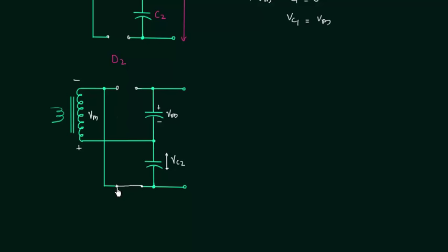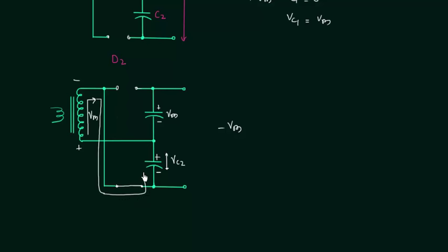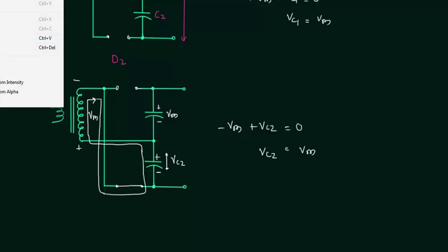Now we use Kirchhoff's voltage law to find the charge on the plates and calculate Vc2. This plate is connected to the positive terminal so it will have positive charge, and this plate is connected to the negative terminal so it will have negative charge. Moving in the clockwise direction: minus Vm, then plus Vc2 equals zero. Therefore Vc2 is simply equal to Vm.